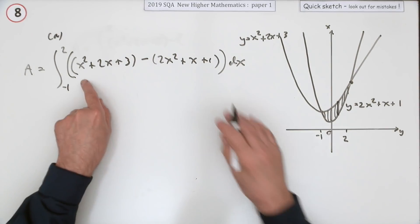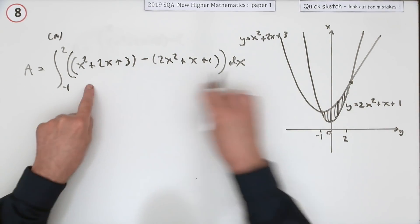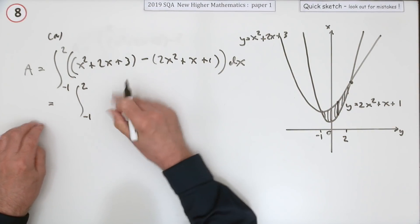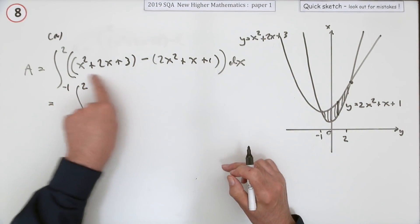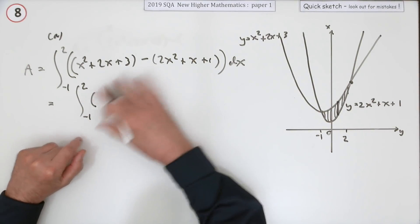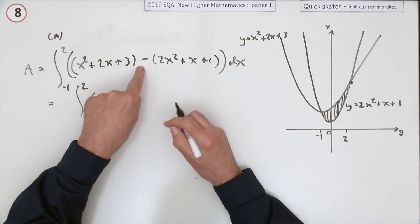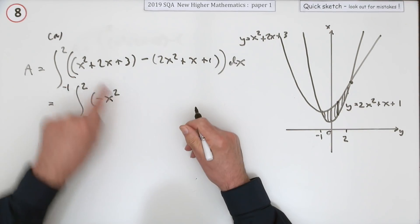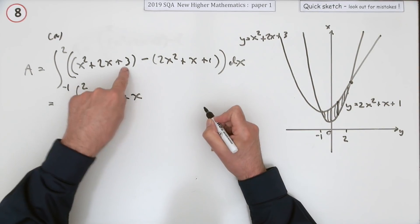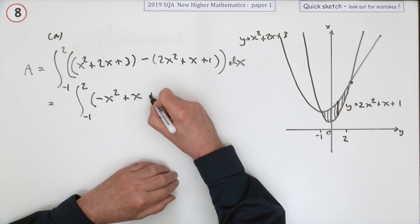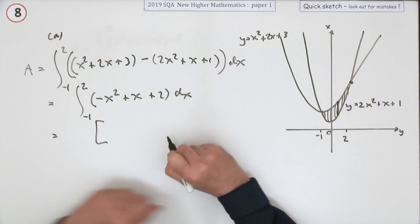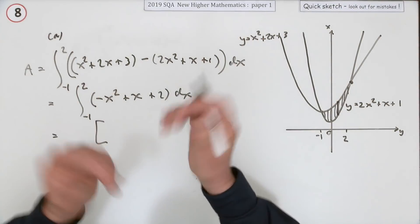That on its own is likely the first mark, but let's tidy it up. You could use all six terms and still get the correct answer, but you might as well simplify since they go in pairs. x squared take away 2x squared is negative x squared; 2x take away x is positive x; and 3 take away 1 is 2. So that's what you're going to integrate.